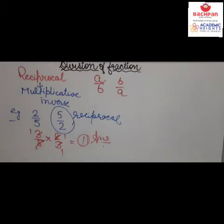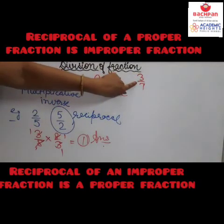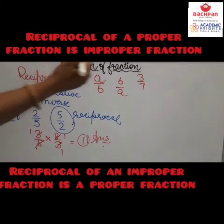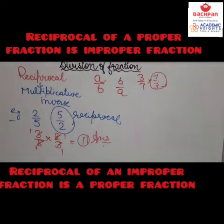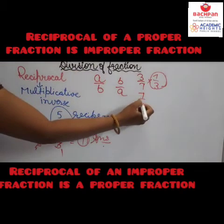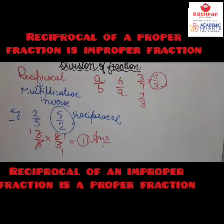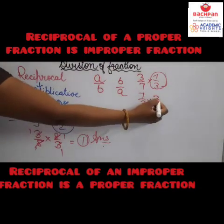One more thing: when a proper fraction is given — for example, 3 upon 7 — its reciprocal is 7 upon 3, which is an improper fraction. Conversely, when an improper fraction like 7 upon 3 is given, its reciprocal is 3 upon 7, which is a proper fraction.